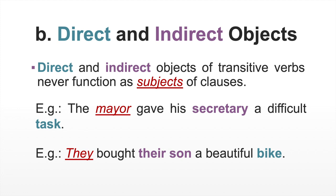An easy way to identify the indirect object is by asking who, and the direct object by asking what. So then, who did they buy a beautiful bike for? And what did they buy their son?